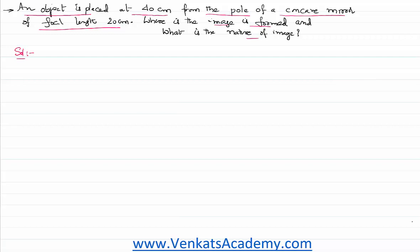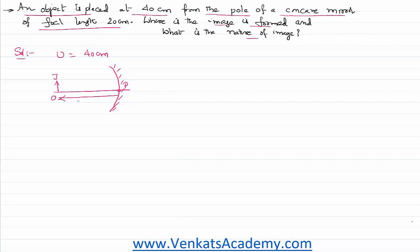Let us take down the given data. The object is placed at a distance of 40 centimeters from the pole of a concave mirror. If this is the concave mirror with the principal axis and pole marked, the object is here. All distances are measured from the pole. The light is falling in a certain direction, so object distance is measured against the direction of incident light. As per the sign convention, something measured against the direction of incident light is treated as negative, so u = -40 cm.